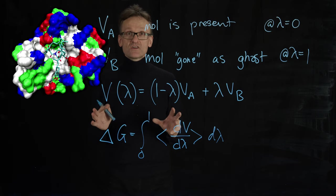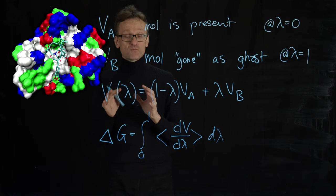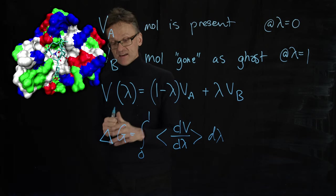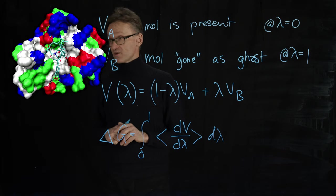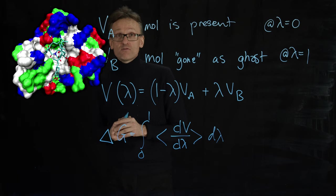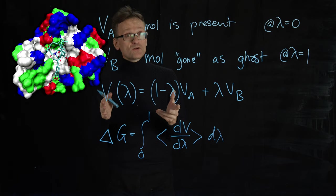But what that means is I'm still having an unphysical process here. I'm turning something into a ghost but along that unphysical process this will allow me to fairly easily calculate an actual free energy along a reaction coordinate. In this case the coordinate of gradually disappearing the FK501 molecule or any other molecule for that matter.